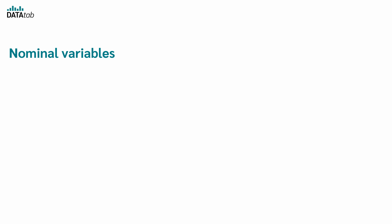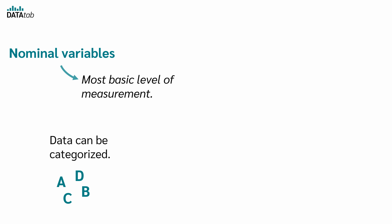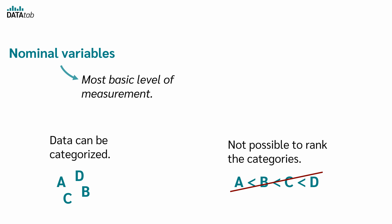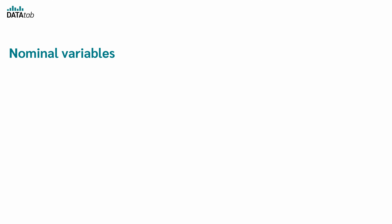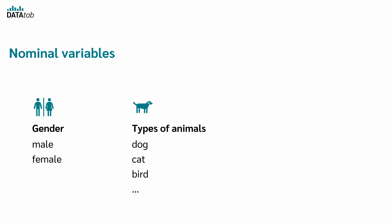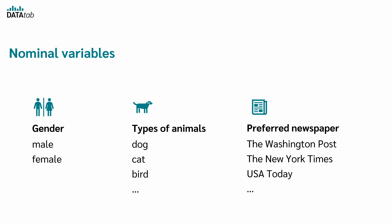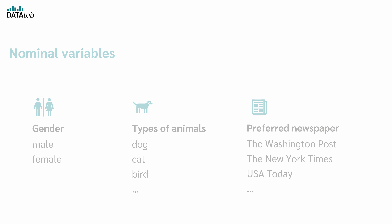What characterizes nominal variables? This is the most basic level of measurement. Nominal data can be categorized, but it is not possible to rank the categories in a meaningful way. Examples of nominal variables are gender with the categories male and female, types of animals with categories like dog, cat, bird, or preferred newspaper. In all these cases, you can tell whether one value corresponds to another – you can distinguish the values – but it is not possible to put the categories in a meaningful order.